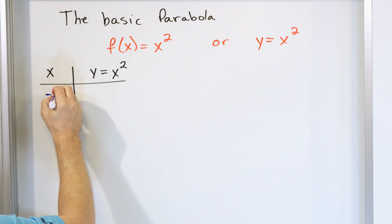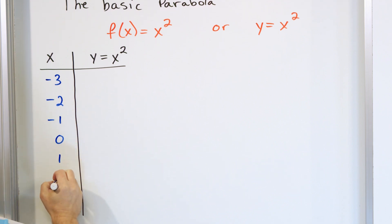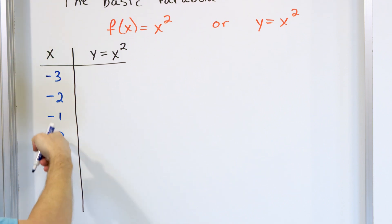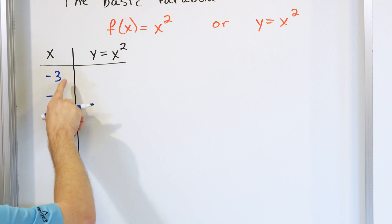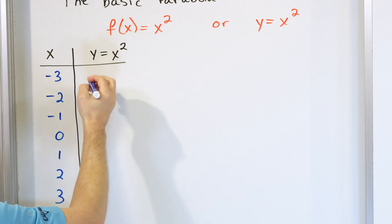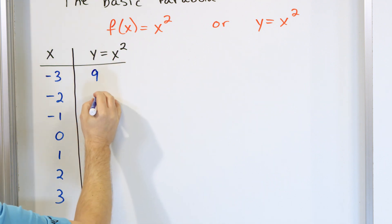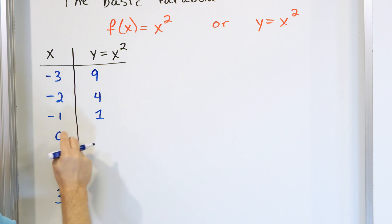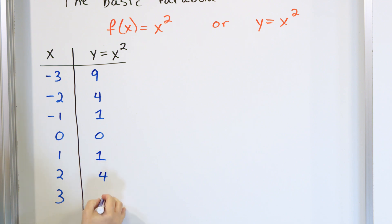We need to pick some points, so let's go from negative three to positive three. When we take negative three and square it, negative three times negative three gives us nine. Negative two squared gives us positive four. Negative one squared gives us positive one. Zero squared is zero. One squared is one. Two squared is four. Three squared is nine.